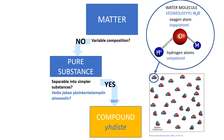Water — vesi — is a good example of a compound, a substance composed of two or more elements in fixed definite proportions. One molecule of water has two hydrogen atoms — vetyatomia — bonded to a single oxygen atom — happiatomi.